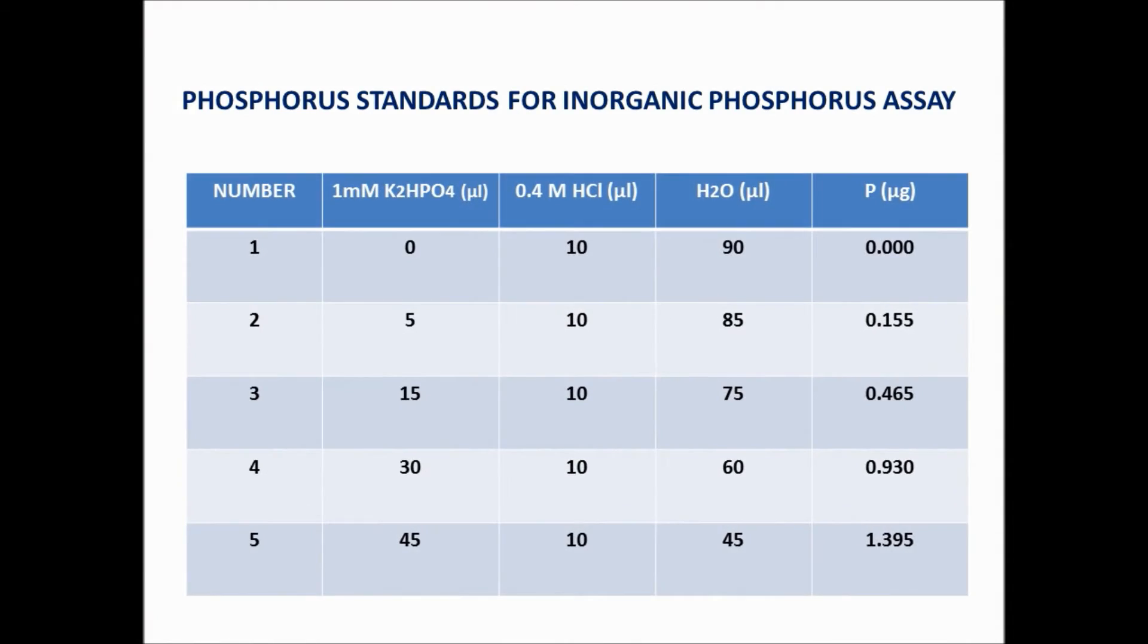Phosphorus standards were estimated as: 5 µL contains 0.155 mcg of free phosphorus, 15 µL contains 0.465 mcg, 30 µL contains 0.93 mcg, and 45 µL contains 1.395 mcg of free phosphorus.